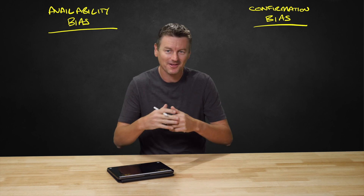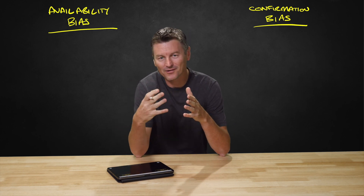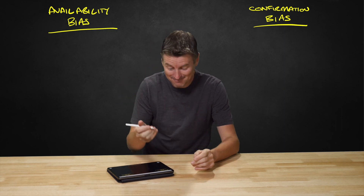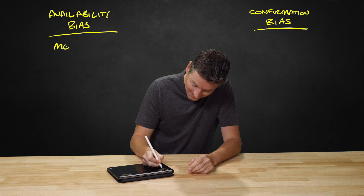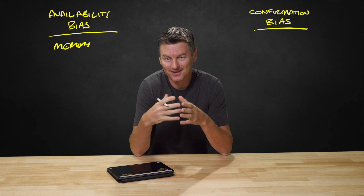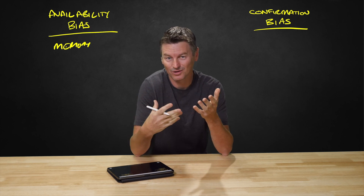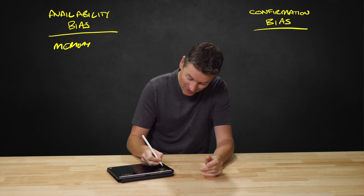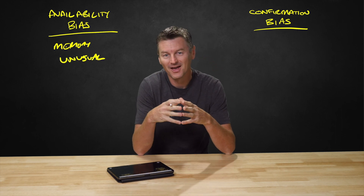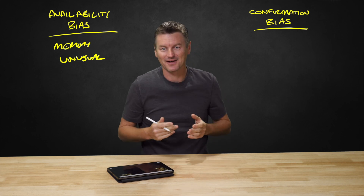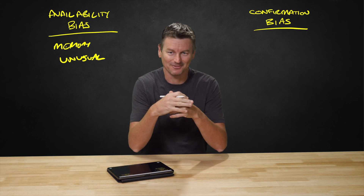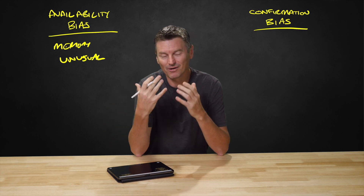Availability bias is a cognitive bias that causes people to overestimate the likelihood of events with greater availability in memory. That can be influenced by how recent the memories are, or how unusual or emotionally charged they may be. Often we base our decisions on information that is available to us at a given time and forget about information that isn't easily recalled, leading us to erroneous assumptions.